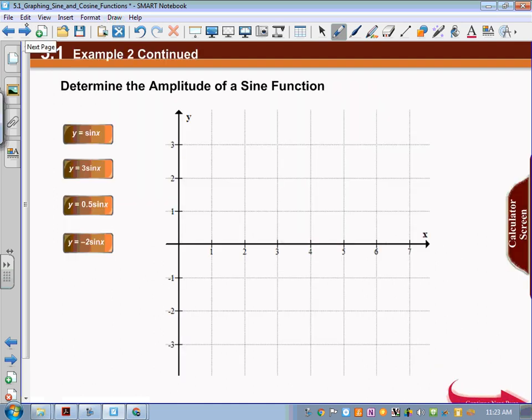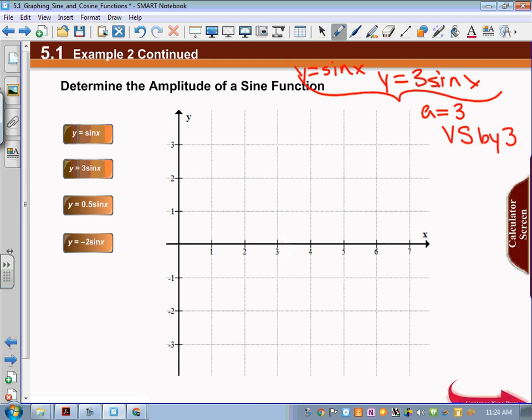If we look at y = 3sin x and compare it to y = sin x, we can use our transformation knowledge and say that a equals positive 3, so we have a vertical stretch by 3.